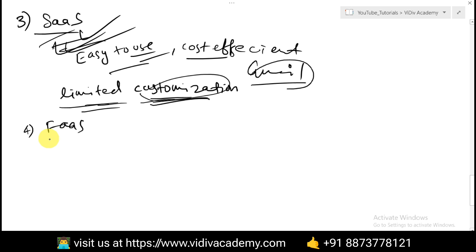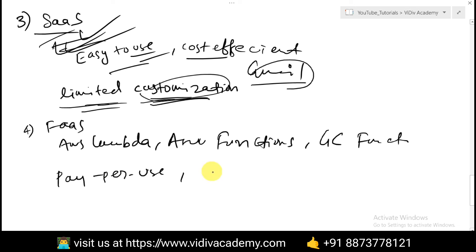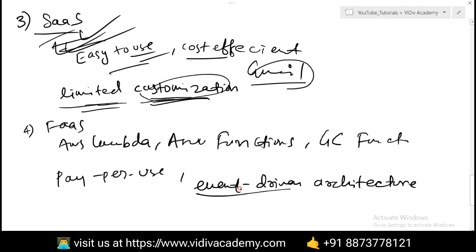FaaS — Function as a Service — is a serverless computing model where developers can write and deploy individual functions without managing servers. Examples include AWS Lambda, Azure Functions, and Google Cloud Functions. It's used by developers building event-driven applications or microservices. Benefits are pay-per-use pricing and high scalability — you just focus on code. The challenge is it requires understanding of event-driven architecture.